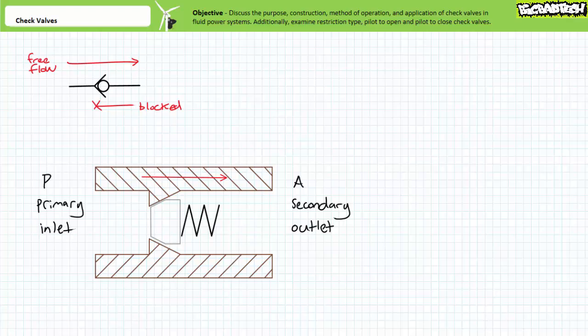Check valves often indicate the direction of free flow by scribing an arrow on the side of the valve body. The inscribed arrow is less likely to fall off than a sticker and remains readable when painted over. The schematic symbol for a check valve shows a ball on a seat because old school check valves really did use a ball rather than a poppet.